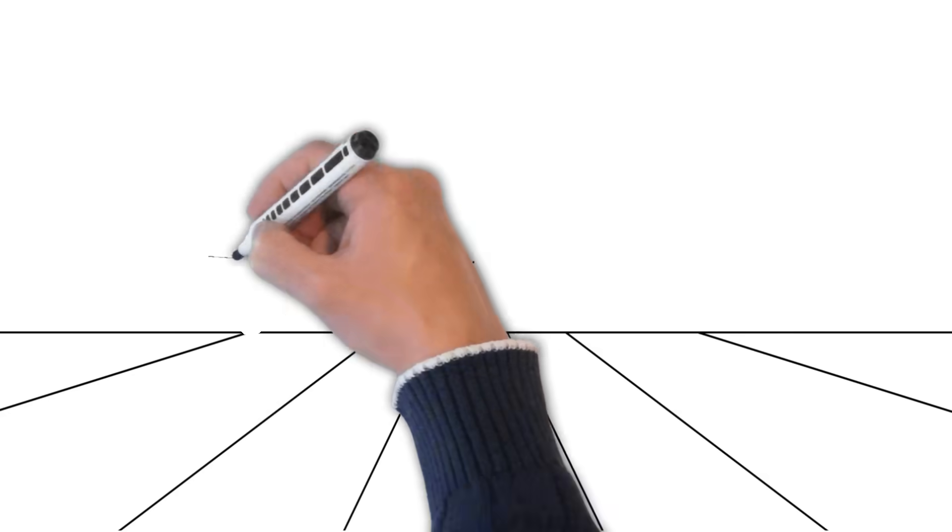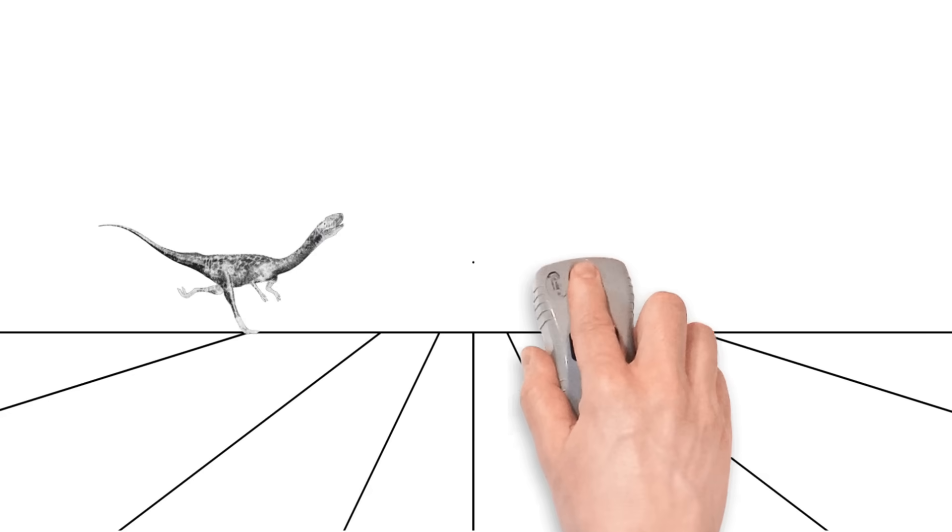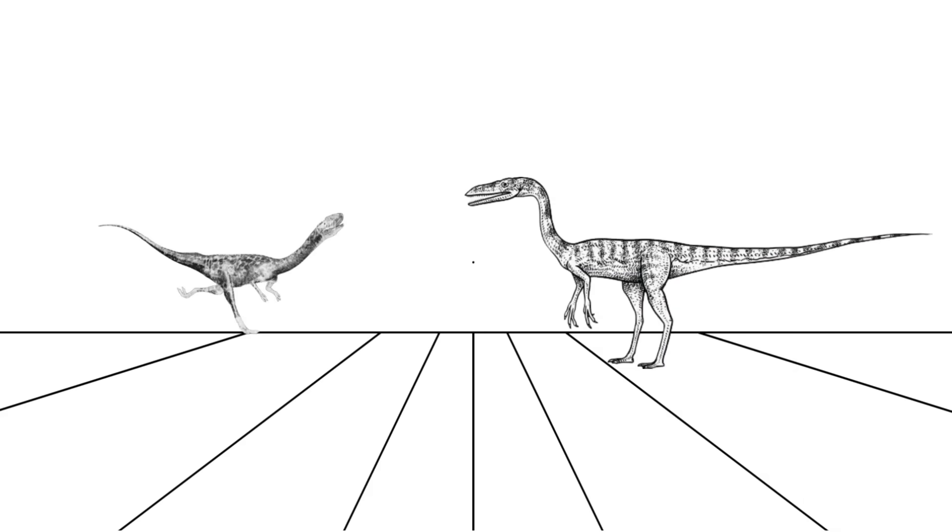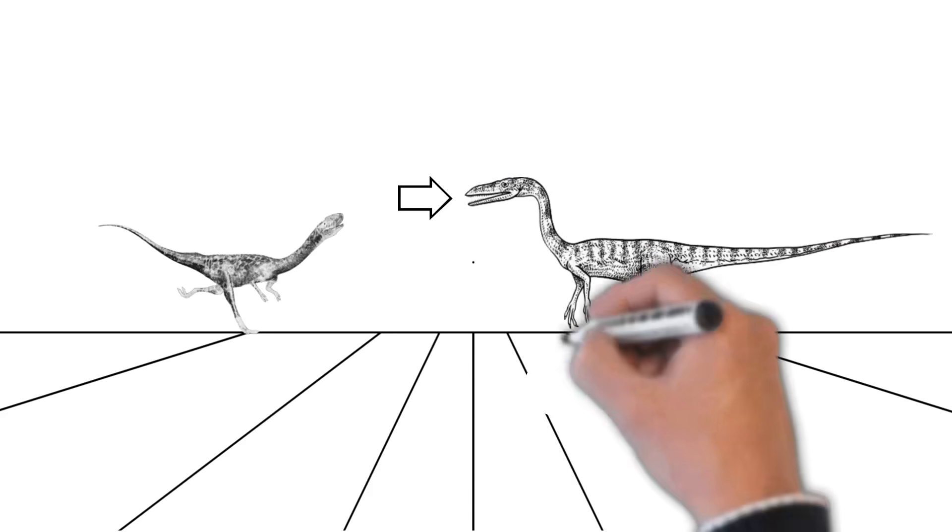Let's not forget Jubalpuria, a small, speedy dinosaur that lived during the late Cretaceous period and was about the size of a dog. Jubalpuria was likely a fast, agile hunter, using its sharp teeth and claws to catch small prey.